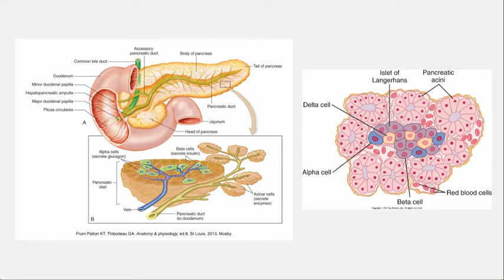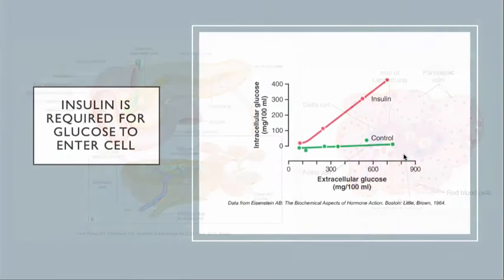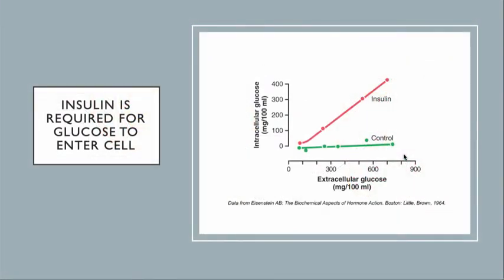That's our old friend the pancreas. Remember that in the pancreas, the islets of Langerhans and the beta cells specifically are the ones we're interested in because they produce insulin.